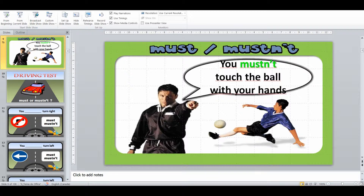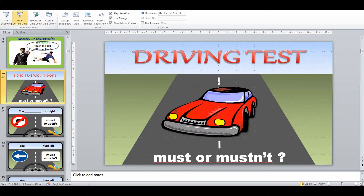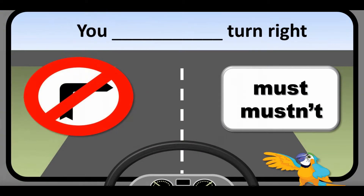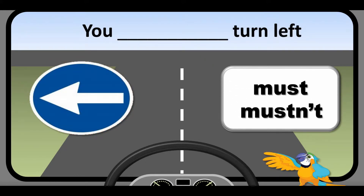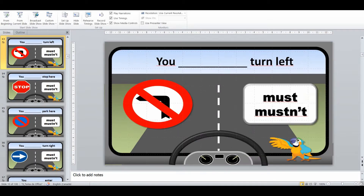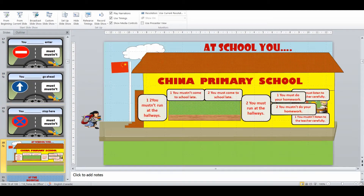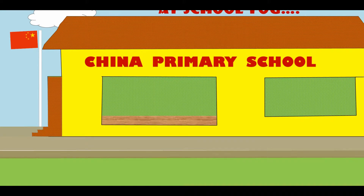Then we go into a game to test their must or mustn't, and it's a driving test. When it says the red, you must or you mustn't — correct. Generally if they see the red they know that it's mustn't. We're practicing getting them to say the full sentence and then we'll also get the class to say the full sentence as well. That one was just practicing the structure.